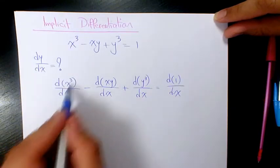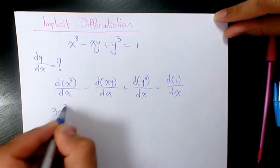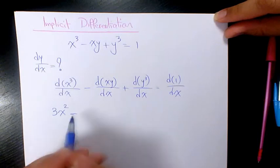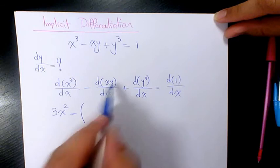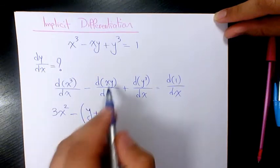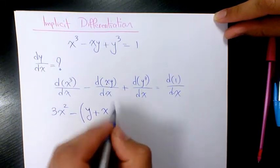So here the derivative of x³ is going to be 3x². Minus derivative of xy is going to be: derivative of x is 1 times y, that's the product rule, plus x times derivative of y.